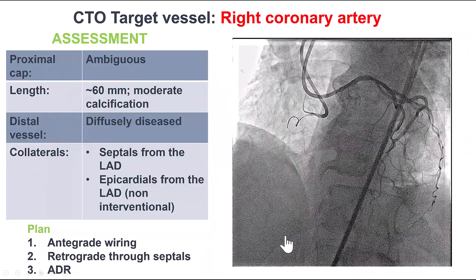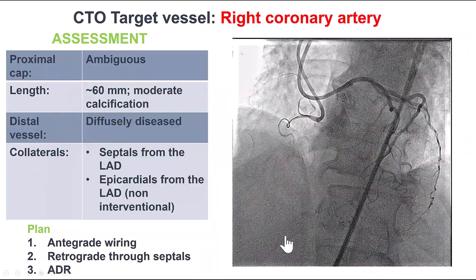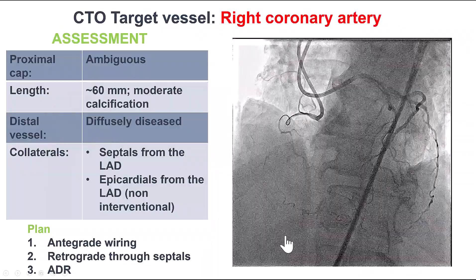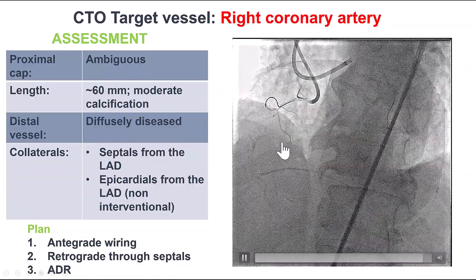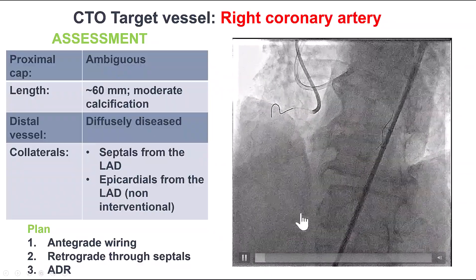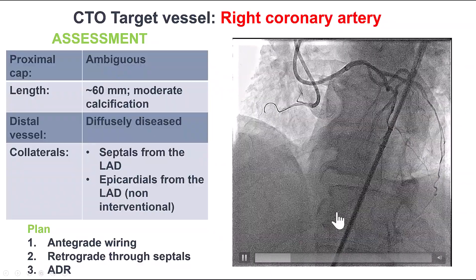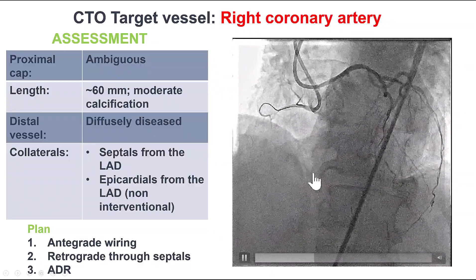There were multiple levels of complexity, including the ambiguity of the proximal cap, the long lesion length, and a diffusely diseased distal vessel.